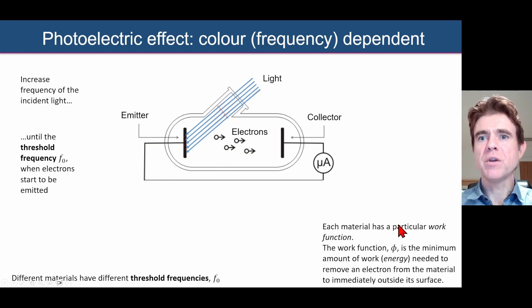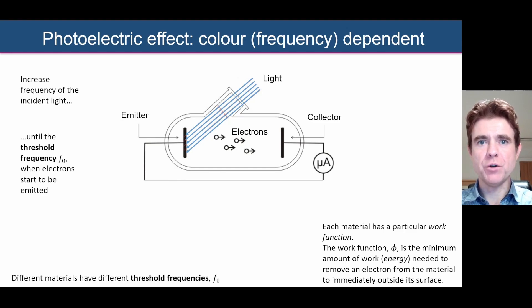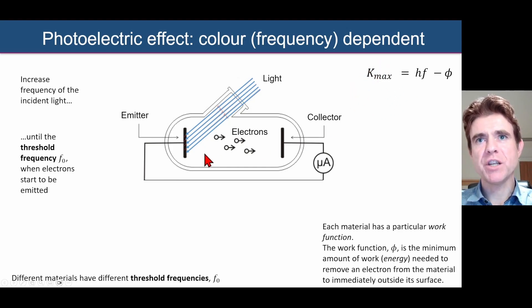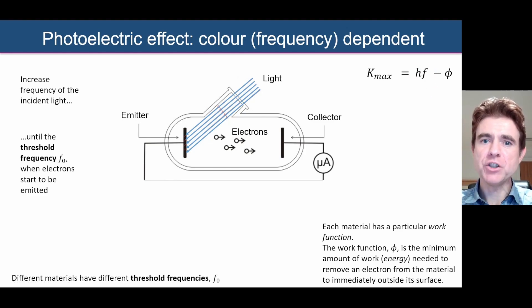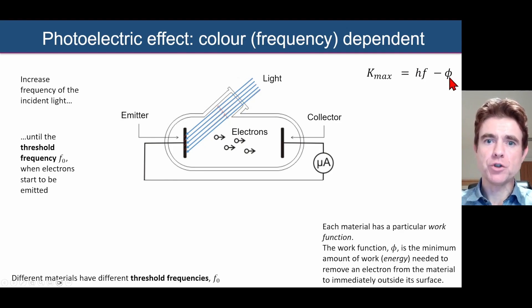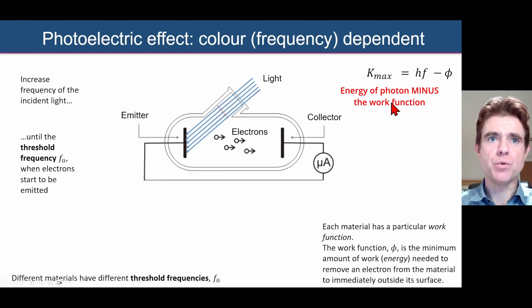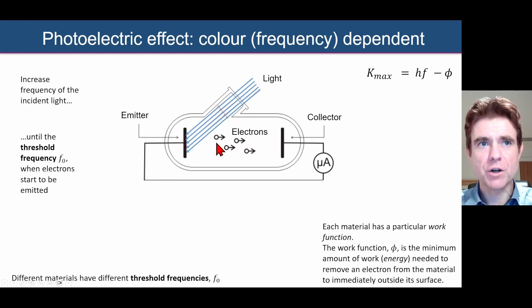Each material has what's called a different work function — that's the binding energy of those electrons. If the photons don't have enough energy, they will not be able to liberate an electron from the surface. The maximum kinetic energy of an emitted electron equals the energy of the photon — hf — minus the work function that needs to be overcome to escape from the material.